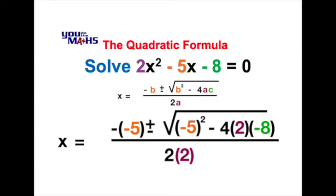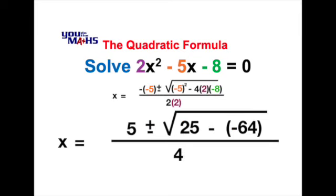Working out those values in the formula, we can see that the negative of -5 is 5, -5 squared is 25, the product of 4, 2, and -8 is -64, and the denominator becomes 4.